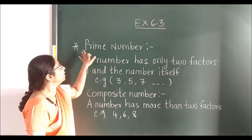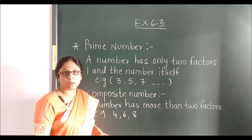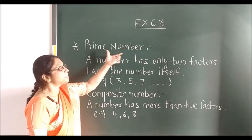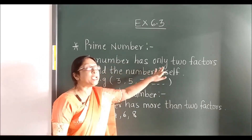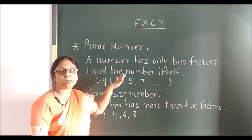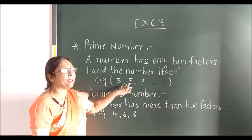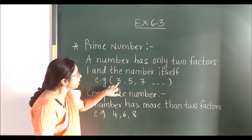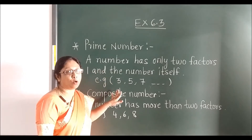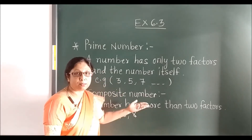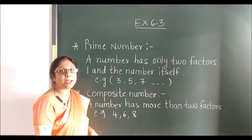In exercise 6.3 we will first see what is a prime number. A prime number is a number that has only two factors: one and the number itself. For example, 3, 5, 7. You can see that these numbers go in their own table only — they don't come in any other table. That is what we call a prime number.